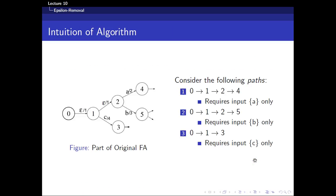The actual algorithm itself can be found in several texts, but it's pretty hard to read right off the bat. So I hope I can give you intuition of this algorithm using a very simple example. Suppose you consider the three paths: 0, 1, 2, 4; then 0, 1, 2, 5; and 0, 1, 3.